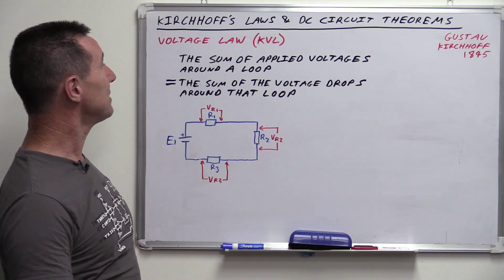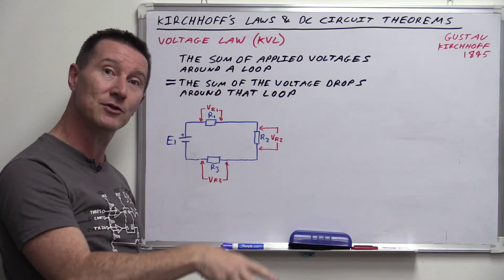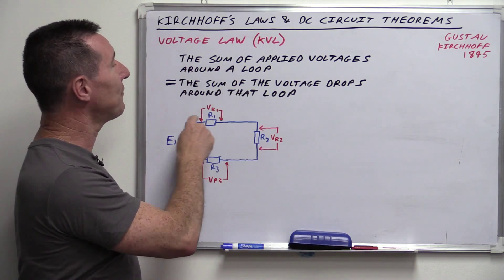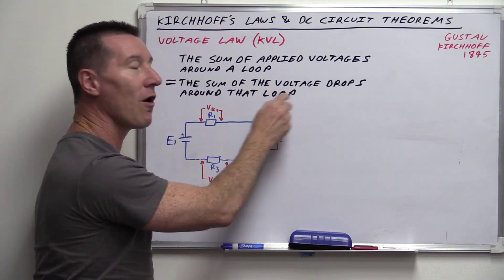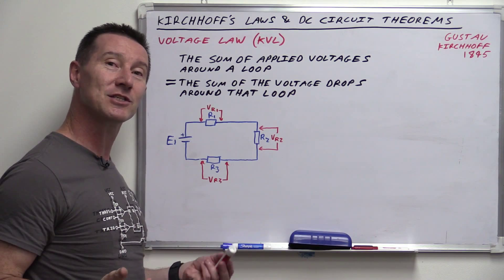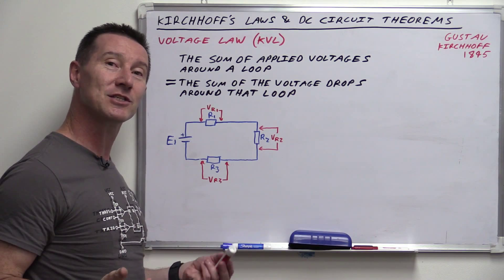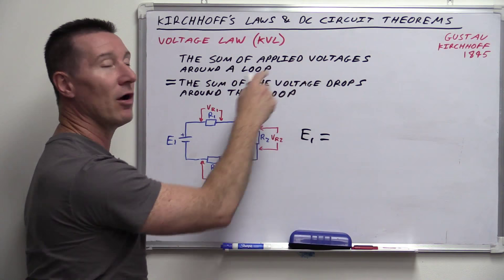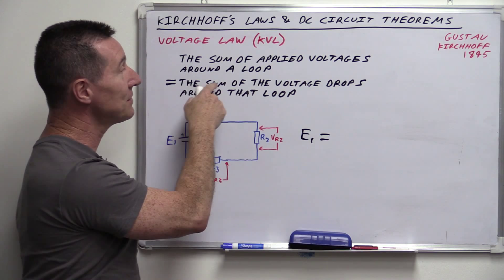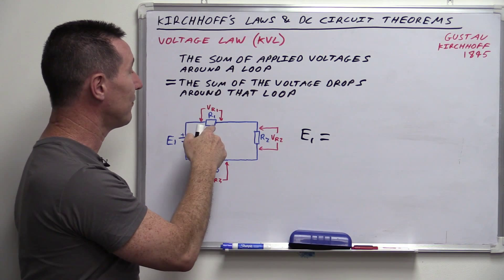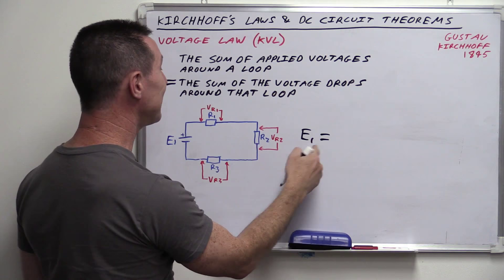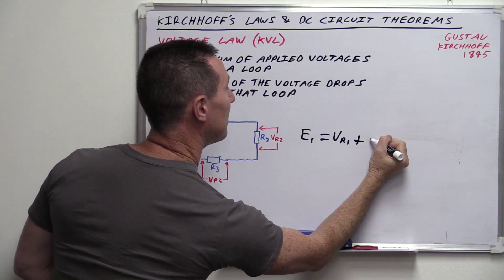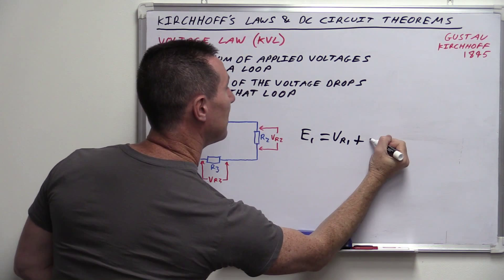What it basically says is: the sum of the applied voltages around a loop — remember, a circuit doesn't do anything unless you have a loop — equals the sum of the voltage drops around that loop. So if we take a look at the circuit here, we have a voltage source E1 and three series resistors. E1 equals the sum of the voltage drops: VR1 plus VR2 plus VR3. We have an equation, and it's easy.